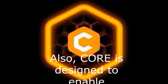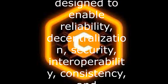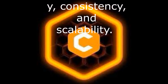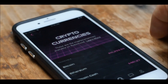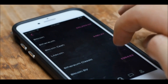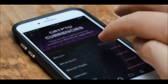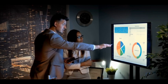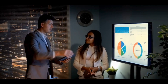Core is designed to enable reliability, decentralization, security, interoperability, consistency, and scalability. Additionally, Core's supply complies with the sound money model of Bitcoin with a hard cap of 2.1 billion tokens. Similar to Avalanche's tokenomics concept, Core will asymptotically approach the total of 2.1 billion tokens but never attain it.